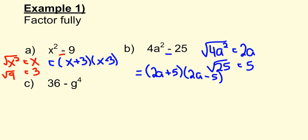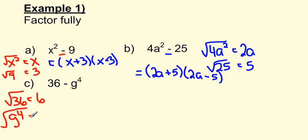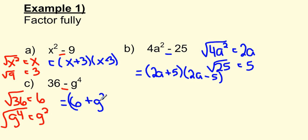Let's look at our last one: 36 minus g to the 4th. Can I take the square root of 36? Yes, that is 6. Can I take the square root of g to the 4th? Yes, that is g squared. Is there a subtraction sign in between? Yes, there is. So the pattern gives us 6 plus g squared times 6 minus g squared.